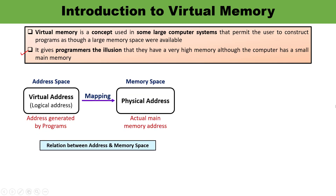Let us discuss what is address space and what is memory space. Address space is denoted by capital N. Memory space is denoted by capital M. The programmer or user address is what we call the virtual address, and the set of virtual addresses is the address space. Memory space contains multiple physical addresses — the set of such locations is known as memory space. So address space is the set of addresses generated by programs and memory space contains actual main memory addresses. In most computers, address space equals memory space, but for computers with virtual memory, the address space is larger than the memory space.